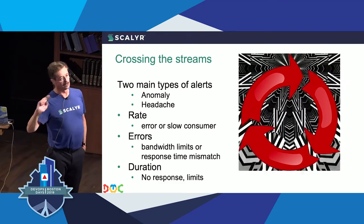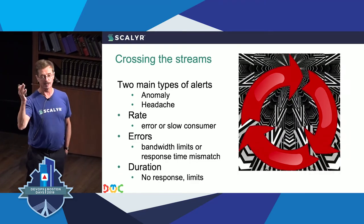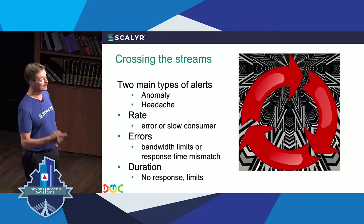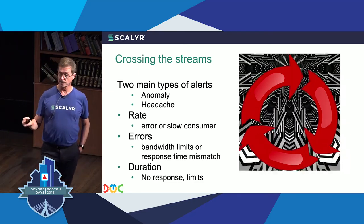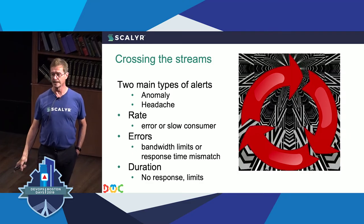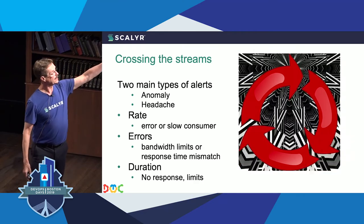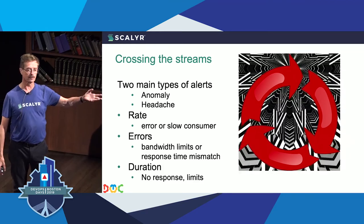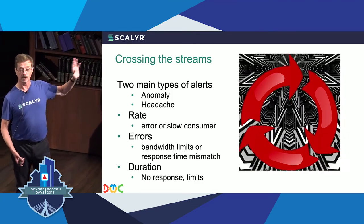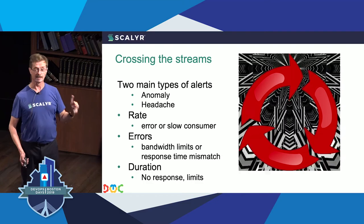Coming up towards the end, there are two types of alerts RED is used in: anomaly alerts and headache alerts. Anomalies are when you've crossed a boundary or dropped below a boundary. Headaches are when it broke — go fix it. The issue with RED is that something that shows up as a headache or an anomaly may be caused by something totally different. For instance, rate can be caused by an error problem; bandwidth can end up as an error problem because of a slow consumer; and duration — something not responding — can show up as an error or as rate. You need to be careful that you're not hitting a false positive.